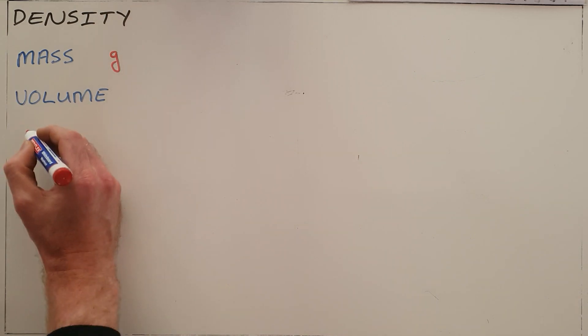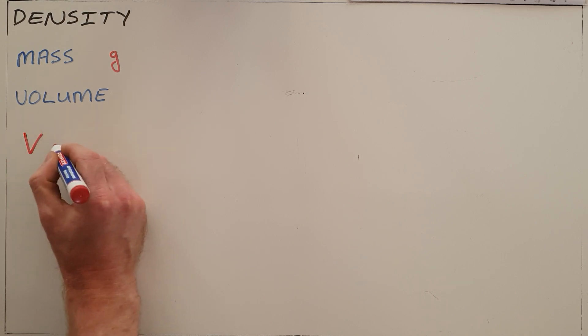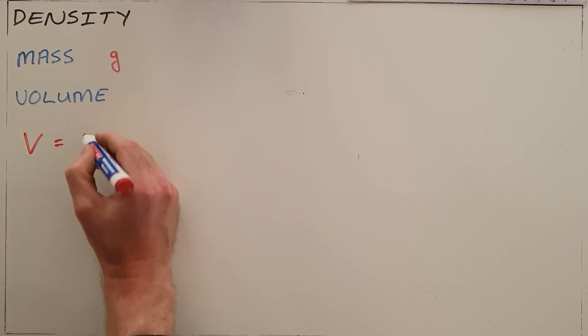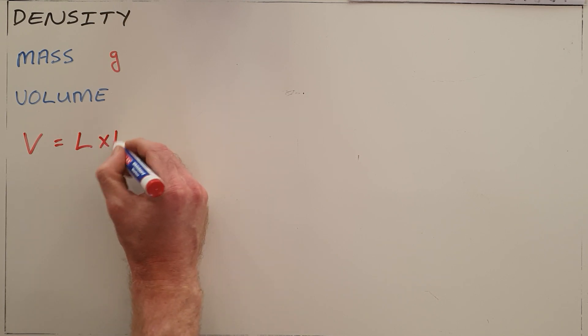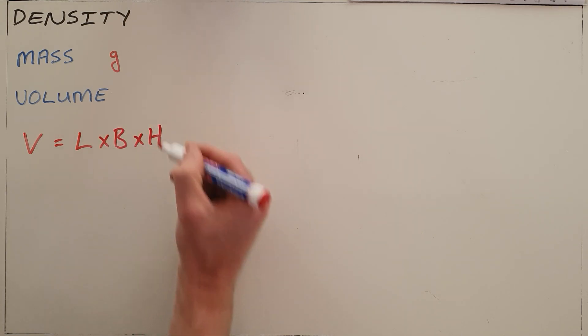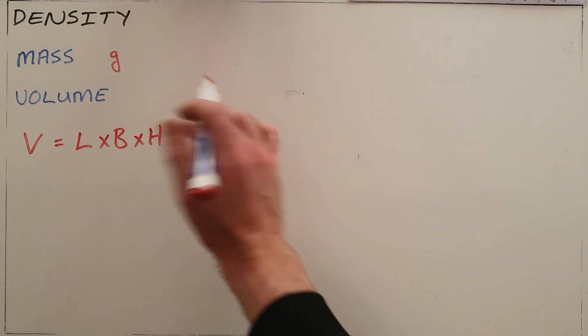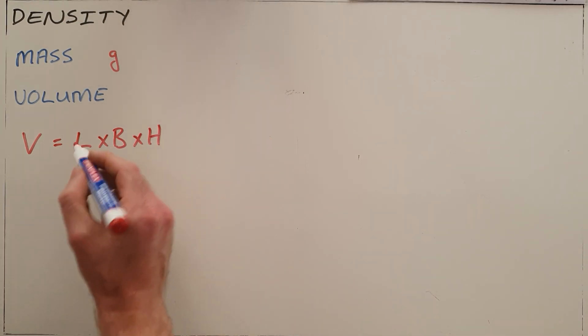We say that a substance's volume can be calculated by multiplying the length of that object by the breadth or width of that object by the height of that object. Essentially, this tells us how much space a specific object occupies, and that is called volume.